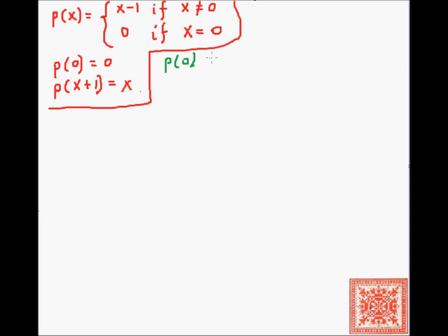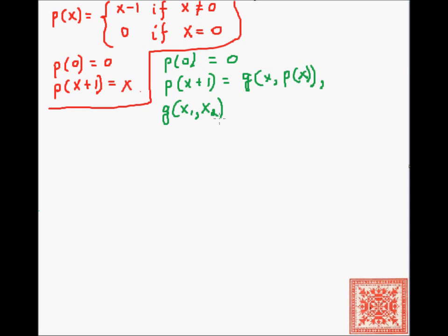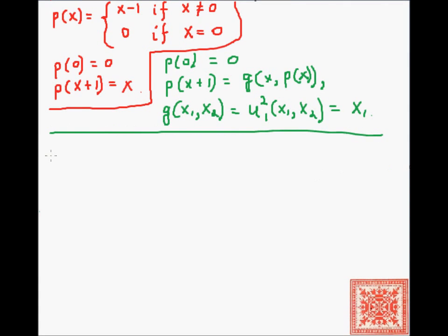So pred(0) = 0, and pred(x+1) = g(x, pred(x)), where g(x1, x2) = the first projection of two arguments, which equals x1. This gives pred(x+1) = x, which is the first projection, and the function is primitive recursive.